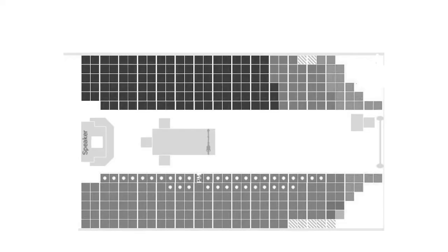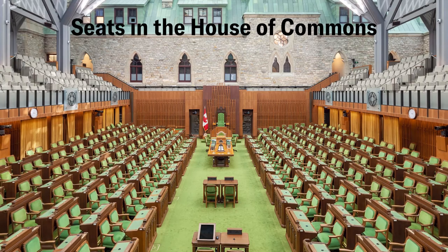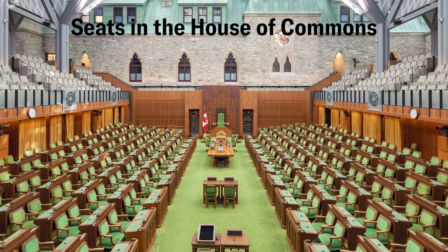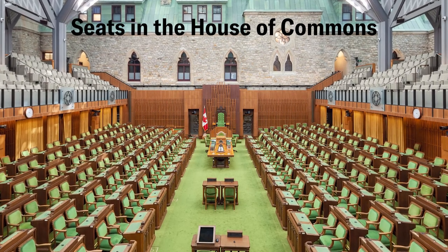We like to use that map alongside a picture or an image of the House of Commons in Ottawa, with 338 seats representing 338 of those ridings.